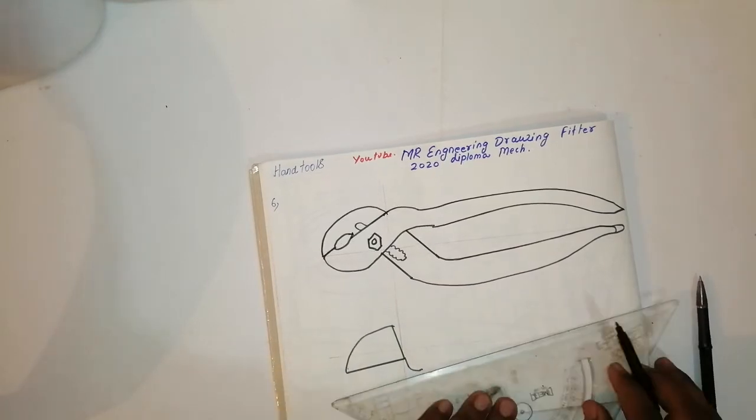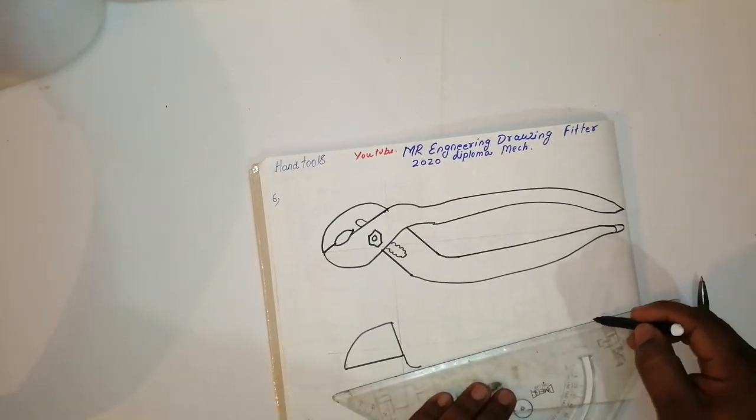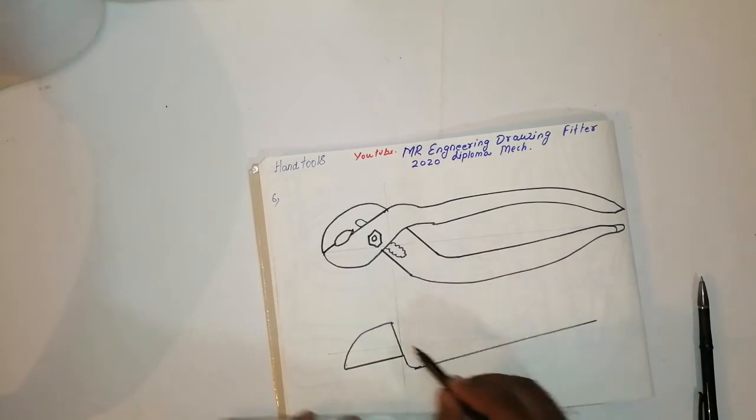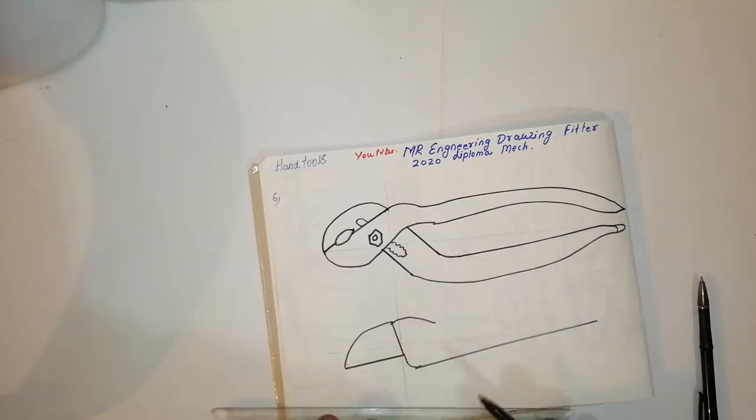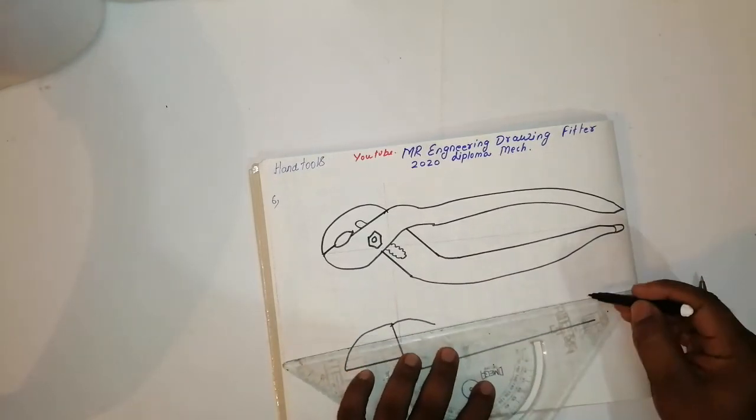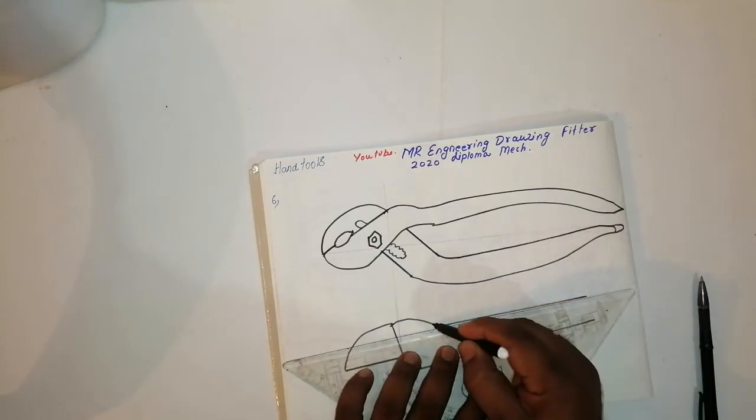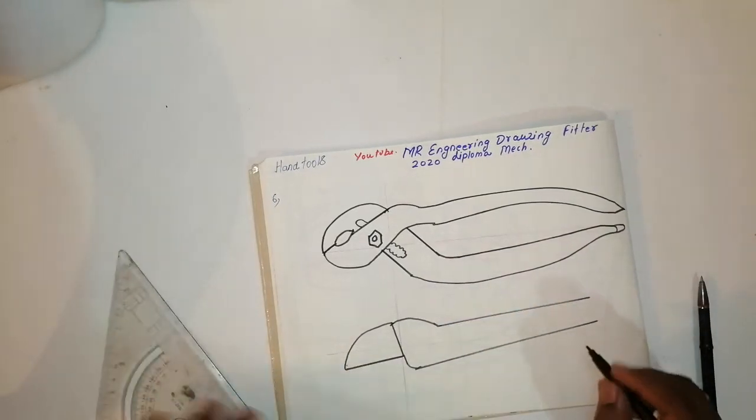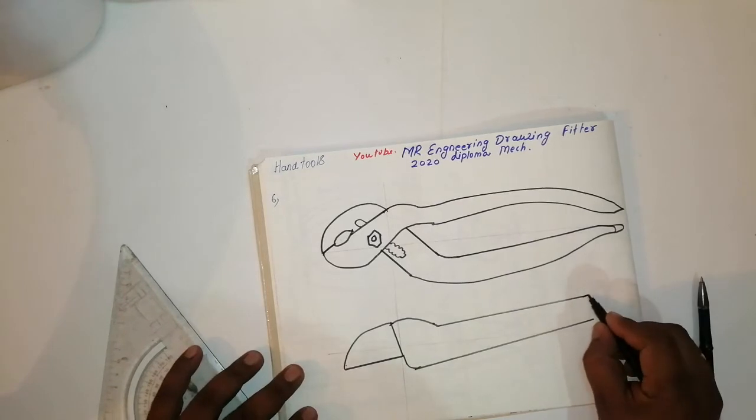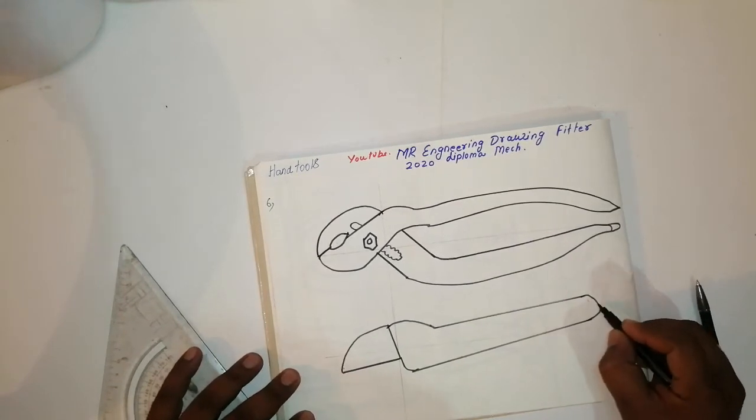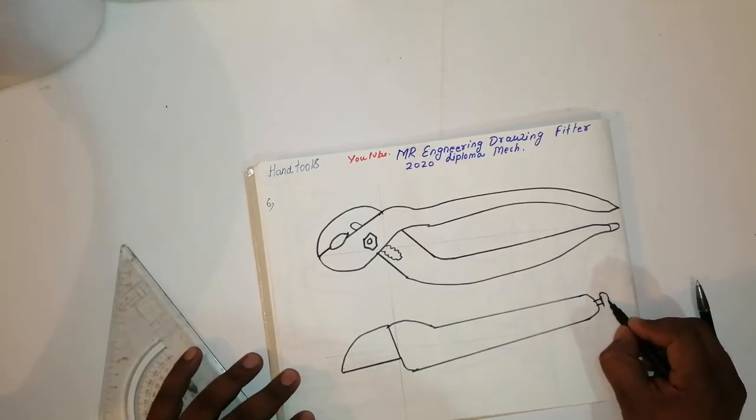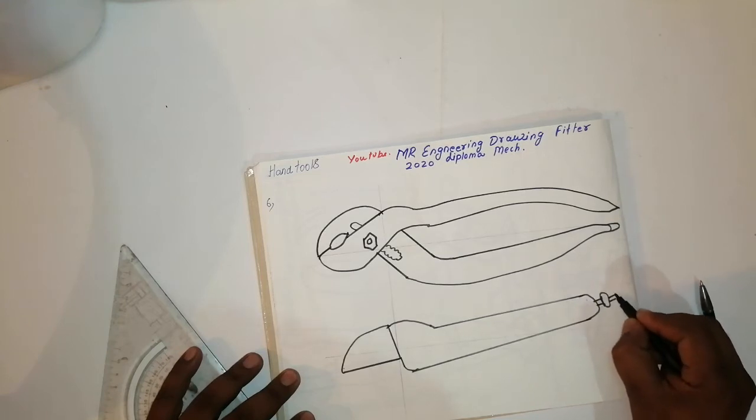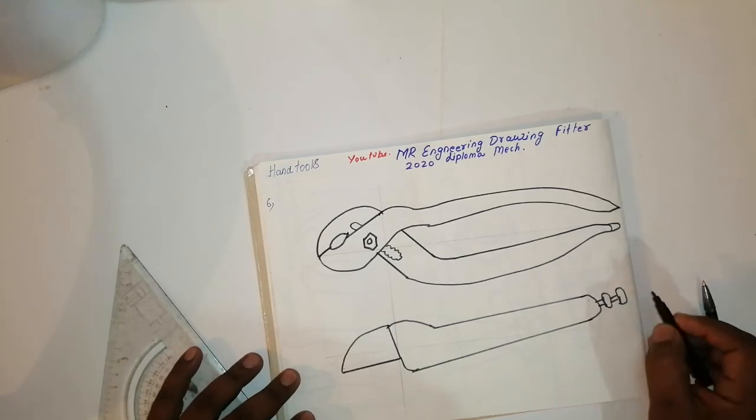Take a little bit of curve and join this portion like this. Take a little bit curve. This is all freehand sketches. This is a hand tool, this is the seventh type of hand tool which you can see in my previous video, Mr. Engineering Drawing Fitter.